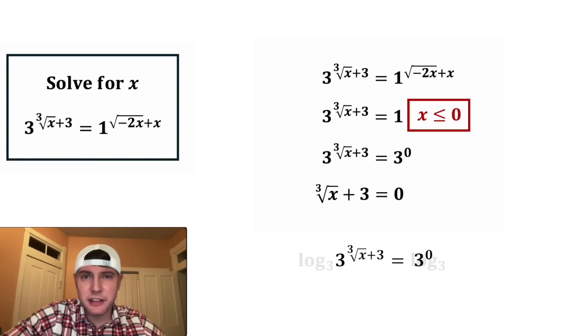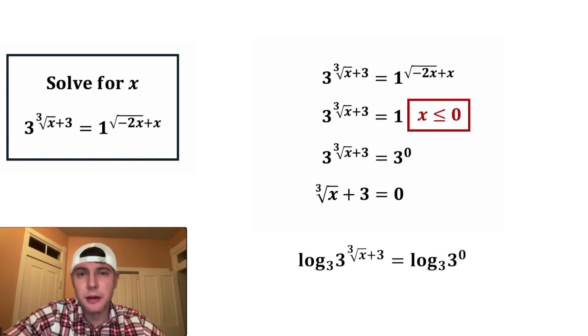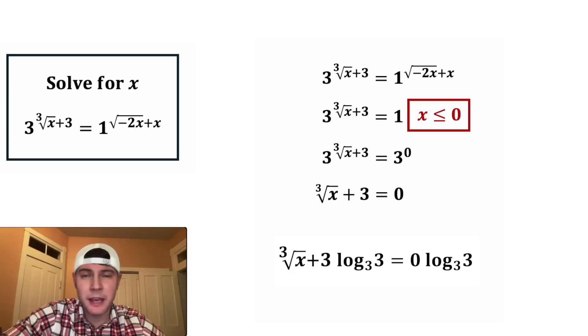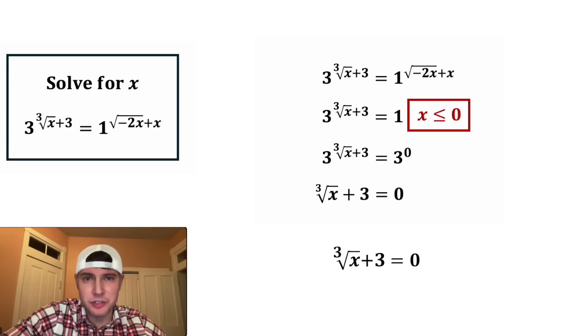So we can drop the base and set the exponents equal to each other. Formally, what we're doing is we're taking the log base 3 of both sides, bringing the exponents to the front. And then both of these log base 3 of 3 are equal to 1. So we have cube root of x plus 3 equals 0. Or in other words, the two exponents were equal.